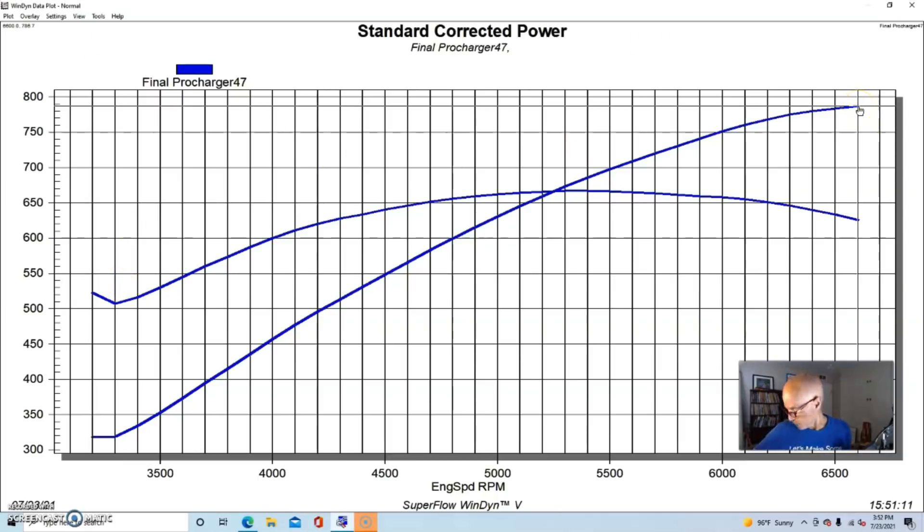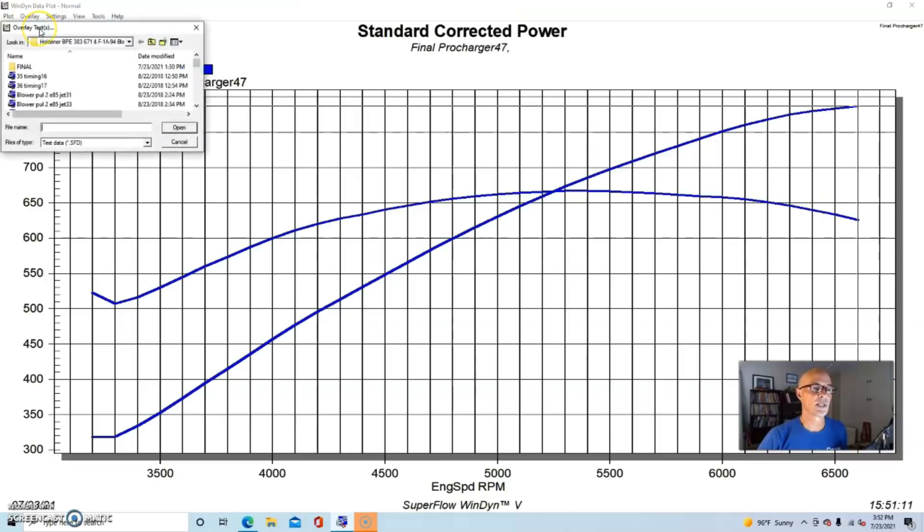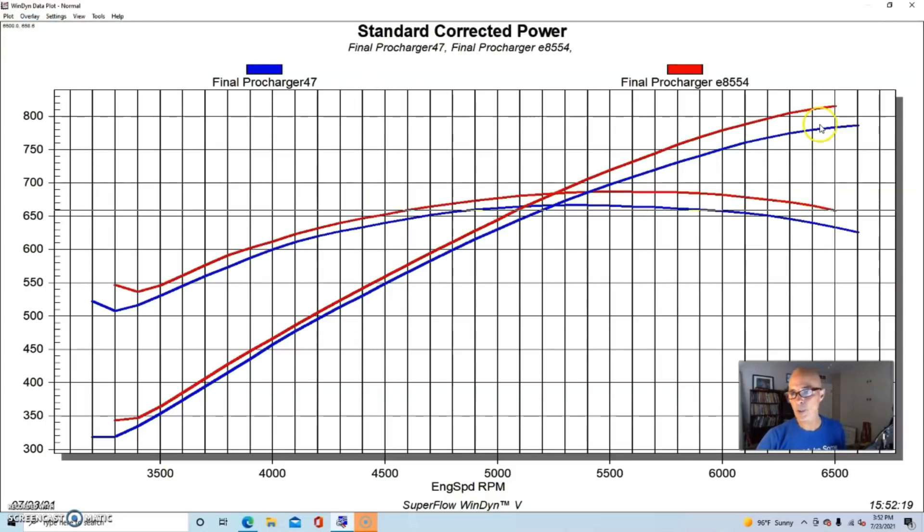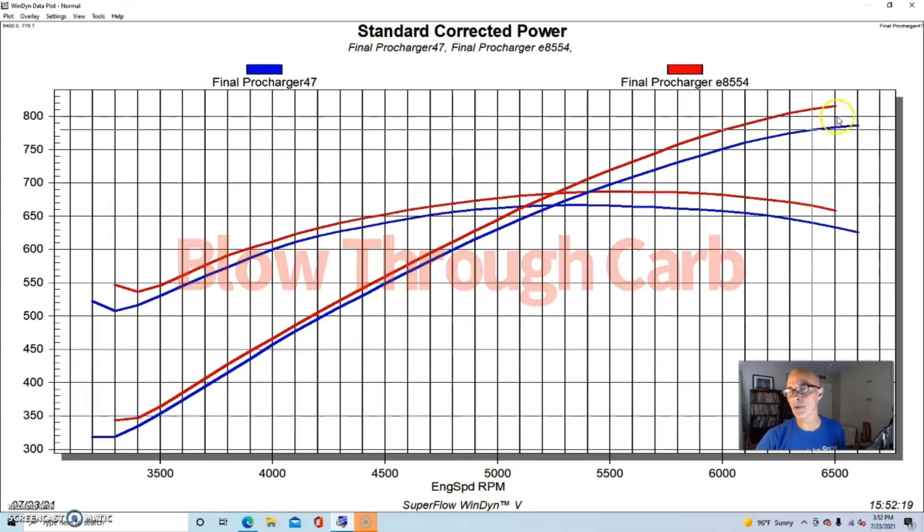Run with our pump gas race gas mix, the F1A-94 was making right at 16 pounds of boost, and on this combination that produced 786 horsepower and 667 foot-pounds of torque. Here's what happened when we replaced the pump gas race gas mix with E85.